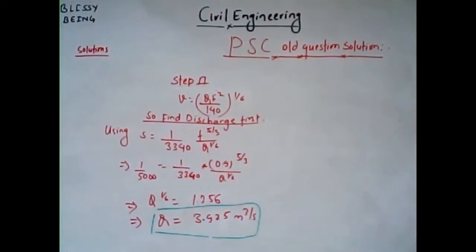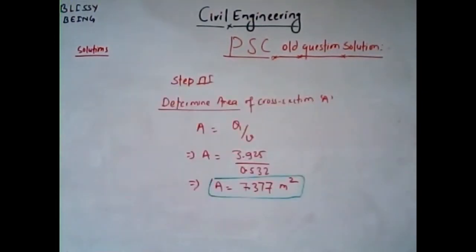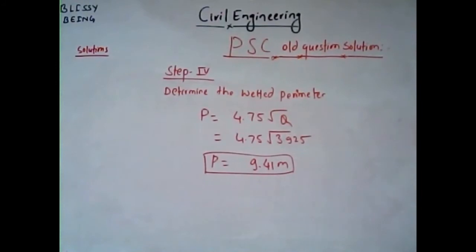Solving the Lacey's formula gives a discharge Q = 3.925 cubic meters per second, and the velocity comes out to be V = 0.532 meters per second. Step 3: Using the continuity equation, area A = Q/V, the cross-sectional area comes out to be 7.377 square meters. Step 4: The wetted perimeter is determined using the formula P = 4.75√Q; substituting Q = 3.925, the wetted perimeter P = 9.41 meters.